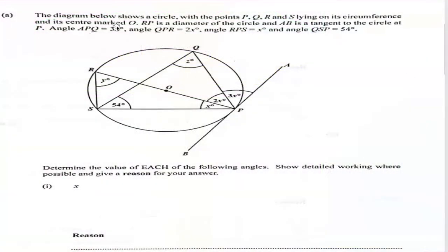The question reads as follows. The diagram below shows a circle with points P, Q, R and S lying on its circumference. As you can see, these points are on the circumference. And its center marks O. This is the center. And RP is a diameter of the circle. So RP is a diameter of the circle. And then AB is a tangent to the circle. So tangent, this is AB, and that is a tangent to the circle at point P.